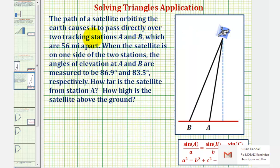The path of a satellite orbiting the earth causes it to pass directly over two tracking stations, A and B, which are 56 miles apart. When the satellite is on one side of the two stations, the angles of elevation at A and B are measured to be 86.9 degrees and 83.5 degrees, respectively. How far is the satellite from station A and how high is the satellite above the ground?